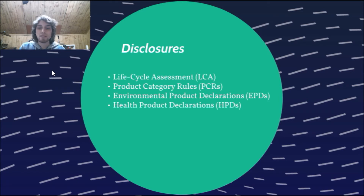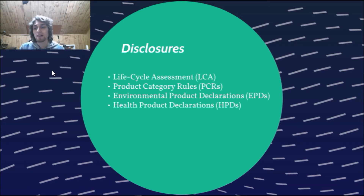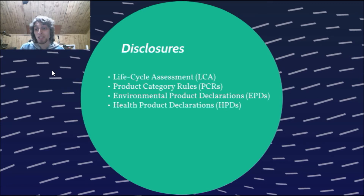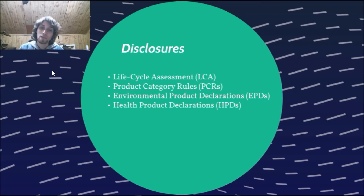The EPDs — environmental product declarations — are standardized, internationally recognized, and comprehensive tools for providing a product's environmental impact based on ISO-compliant LCAs. They also must follow PCR requirements. Health product declarations, or HPDs, look at impacts on human and environmental health. They include information to evaluate accurate supply chain disclosure and to support informed decisions, disclosing materials and impacts used in the final product.